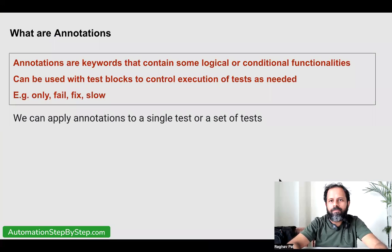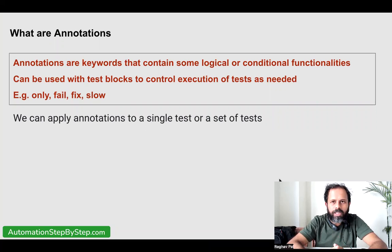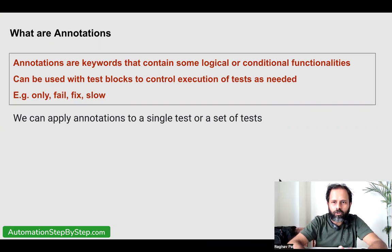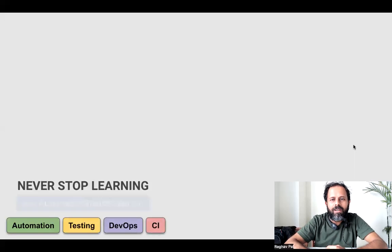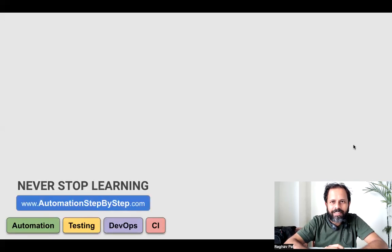To summarize: annotations are keywords that contain some logical or conditional functionalities, and you can use them within test blocks to control execution of the tests as you require. You can apply annotations to single tests, a set of tests, or also to a group. I hope this was useful. If you have any questions, let me know in the comments section. I'll see you in the next session — thank you for watching and never stop learning.